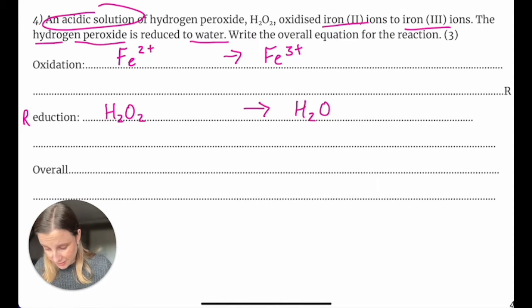I just need to balance for the charge. There's 2+ on the left hand side, 3+ on the right hand side. So I need one electron here. And that whole thing is balanced. That is correct for the oxidation equation.